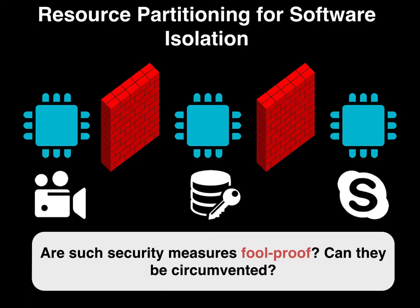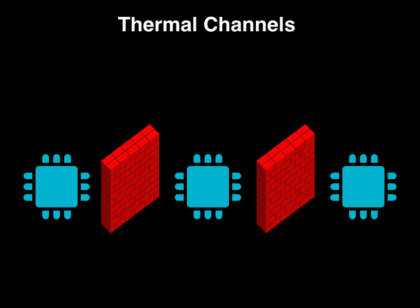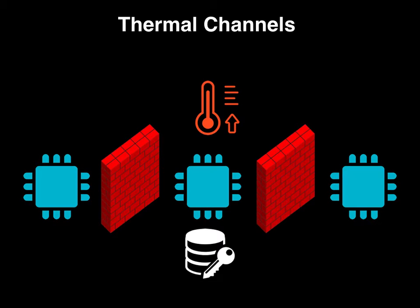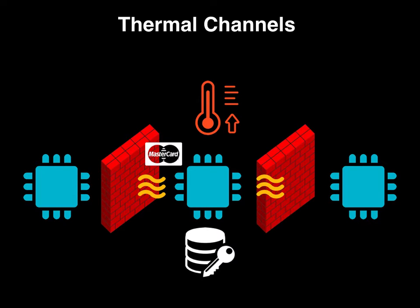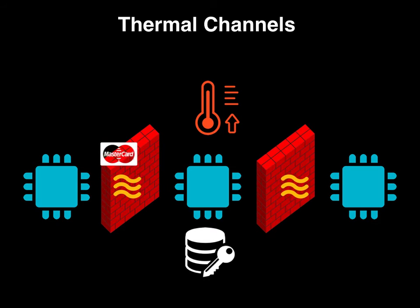However, is it really the case? For the first time, we demonstrate attacks that exploit HEAT — a byproduct of any computation — to circumvent resource partitioning schemes. For instance, we show that it is possible to communicate credit card information using HEAT as the communication channel within 5 seconds.